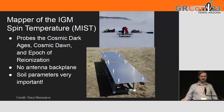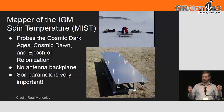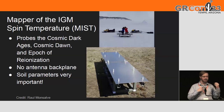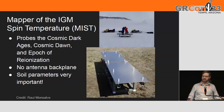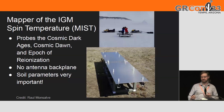We've also got a second antenna called the Mapper of the IGM Spin Temperature — MIST — probing the dark ages and cosmic dawn. This was designed to verify a previous measurement called the EDGES detection. There was discussion that the EDGES result could possibly have been caused by the antenna backplane, which may have caused some interference with that detection, and we want to verify whether that signal was real.